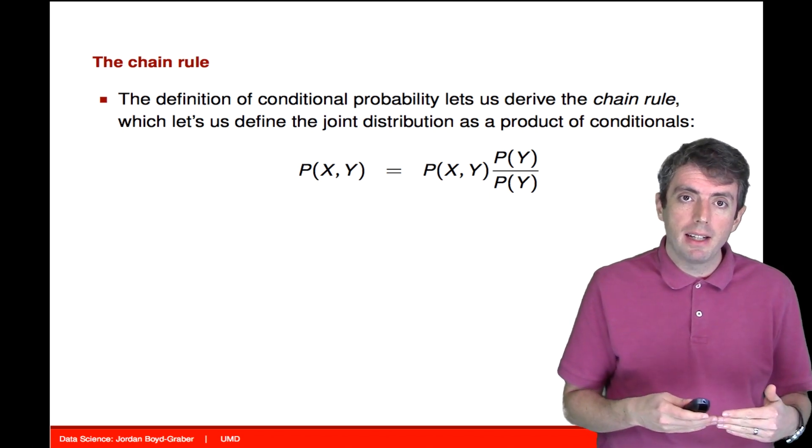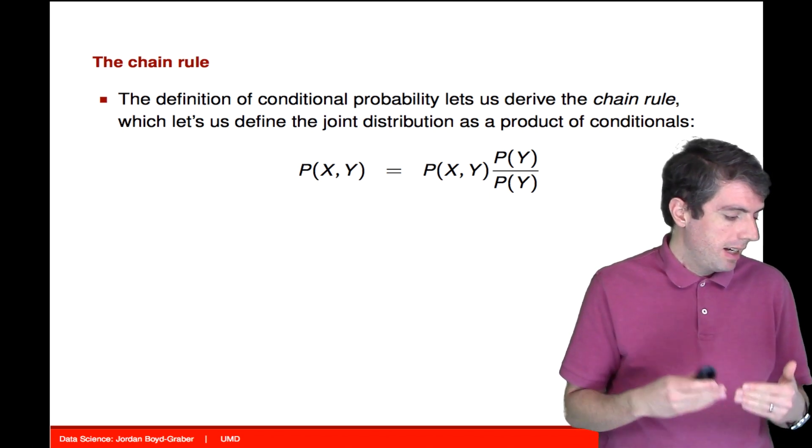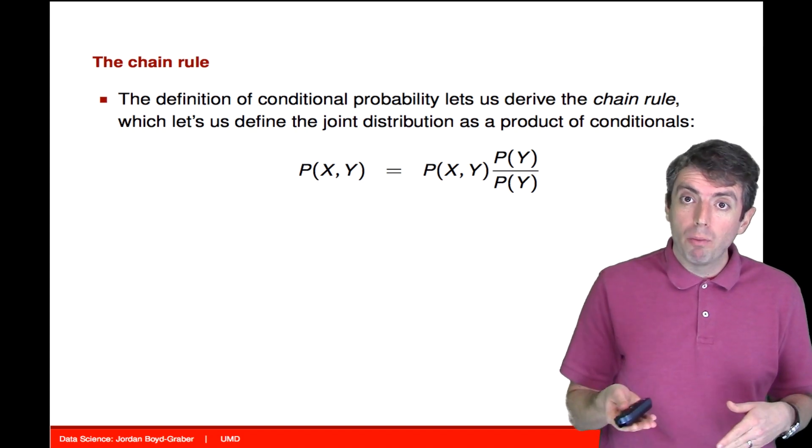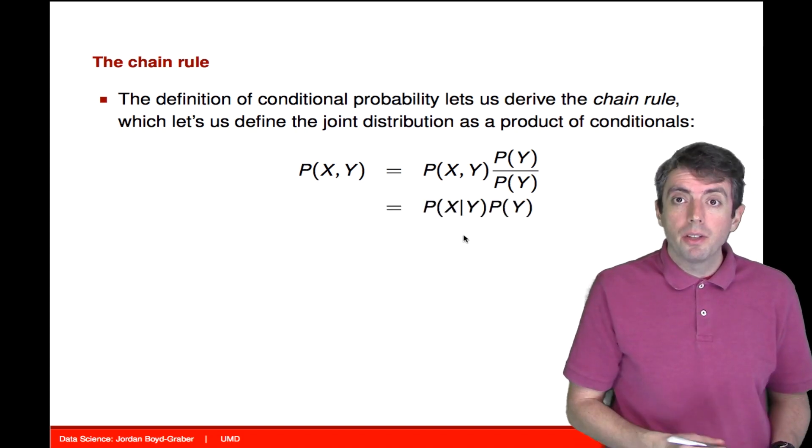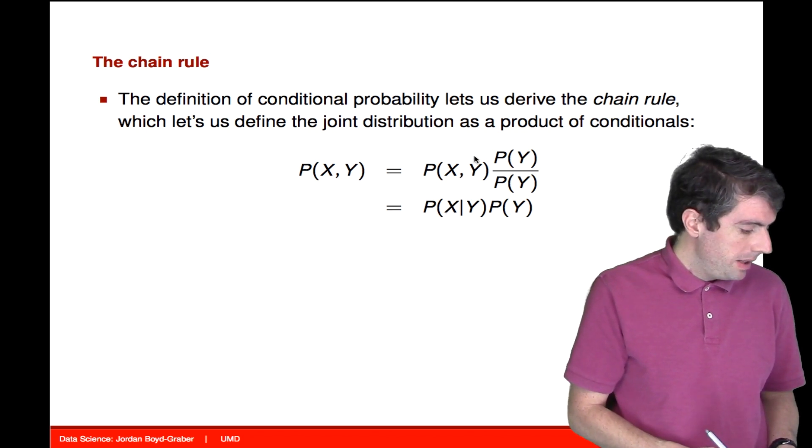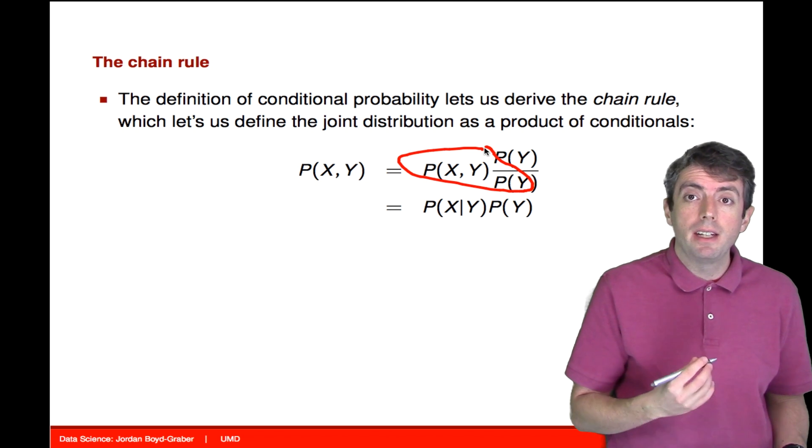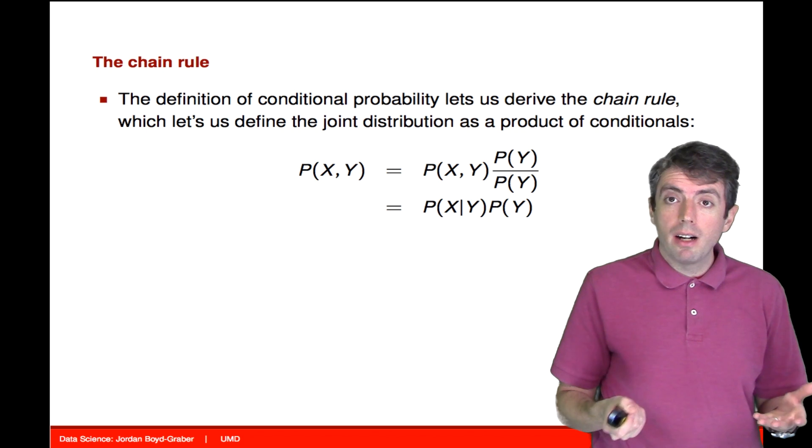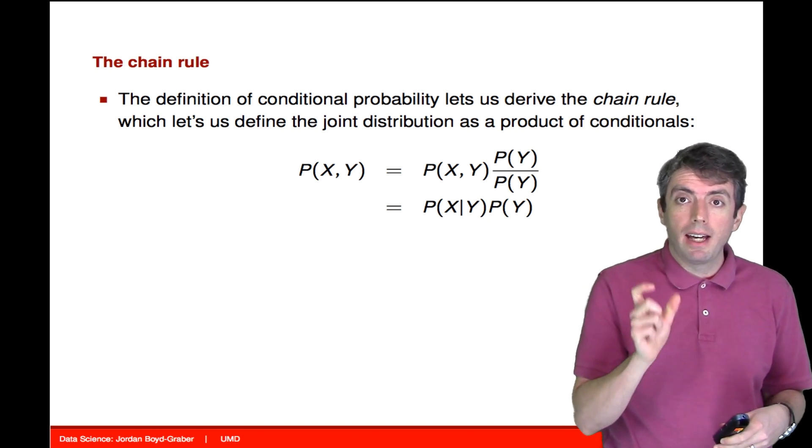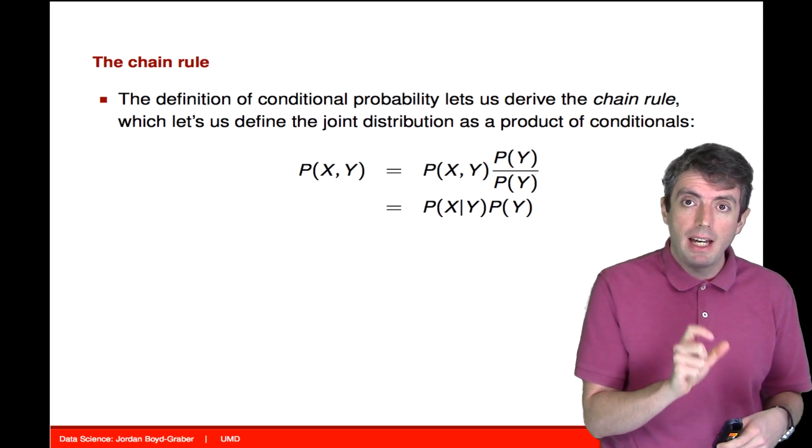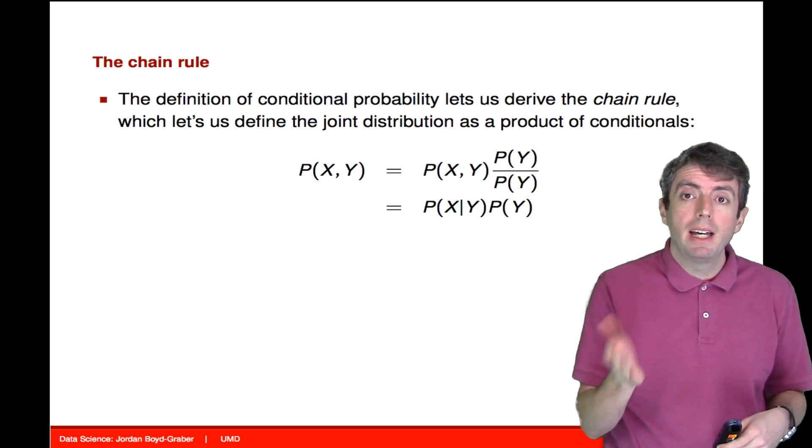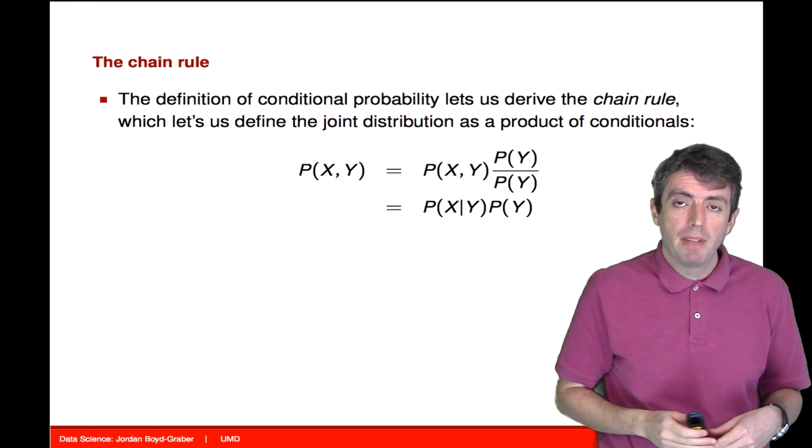So first, let's write a joint probability as a joint probability multiplied by one. And we'll write one as p of y over p of y. So you'll notice that p over p is just the definition of the probability of p given y.